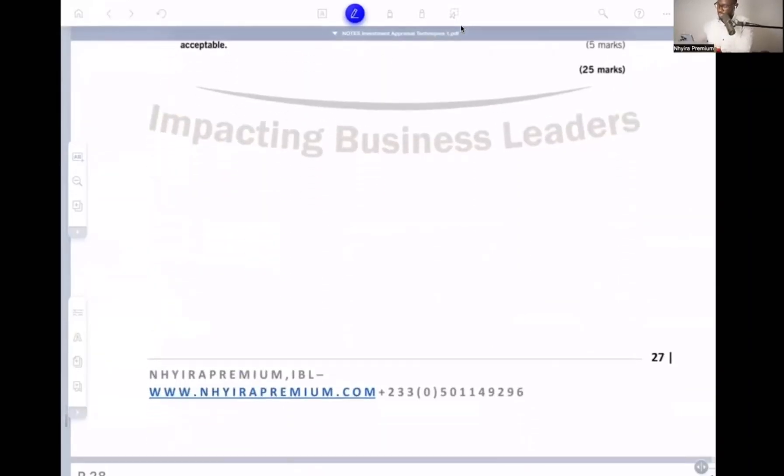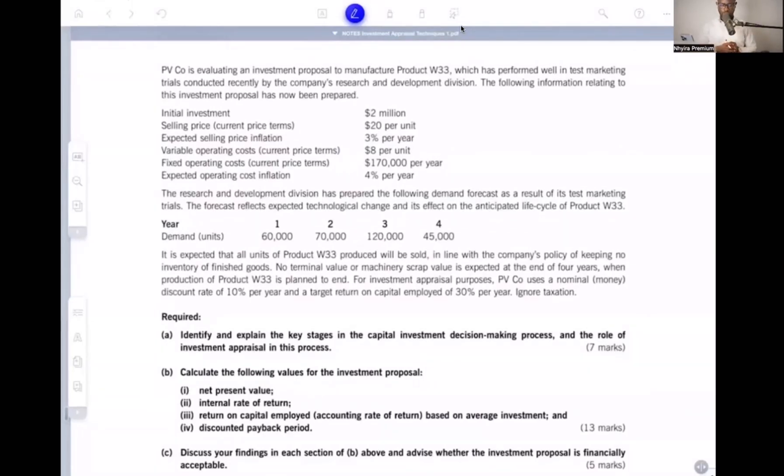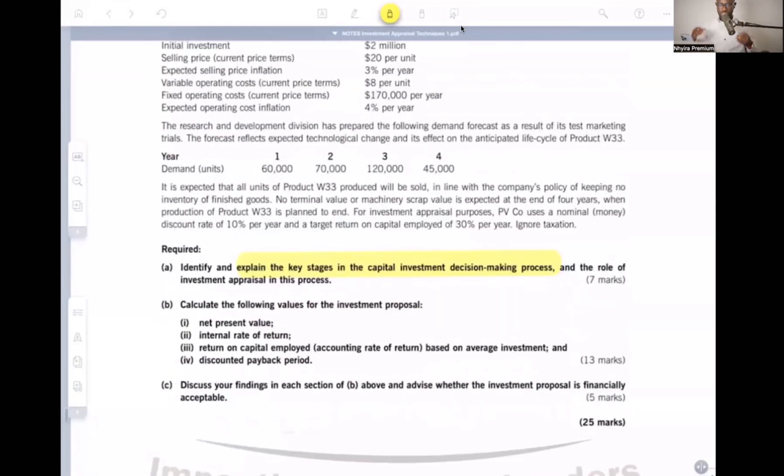This question on page 27 of the investment appraisal documents identifies and explains the key stages of capital investment decision. We've already spoken about this last week: identification of investment proposals, screening out the investment proposal, analyzing and evaluation, and then approving and monitoring the proposal. So those are the key steps. But let's come to the B aspect of the question, which is where focus is.